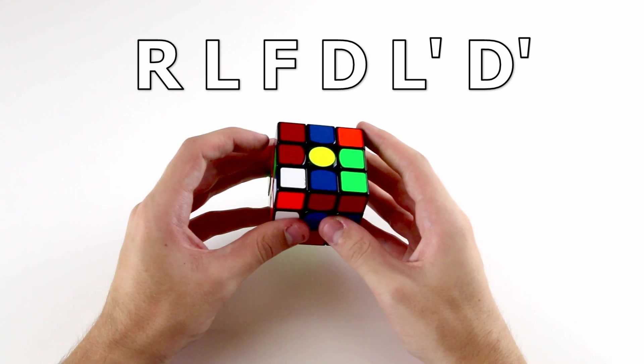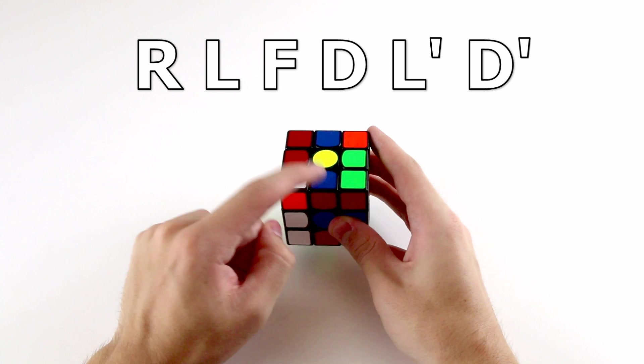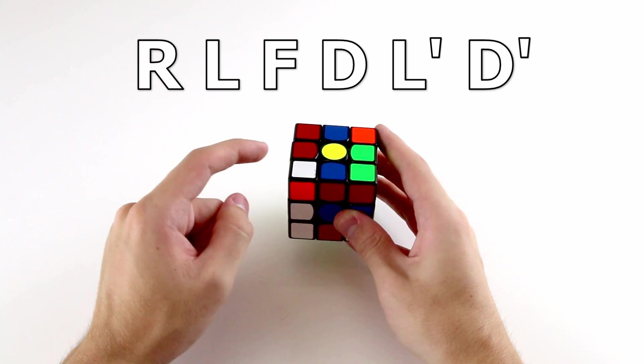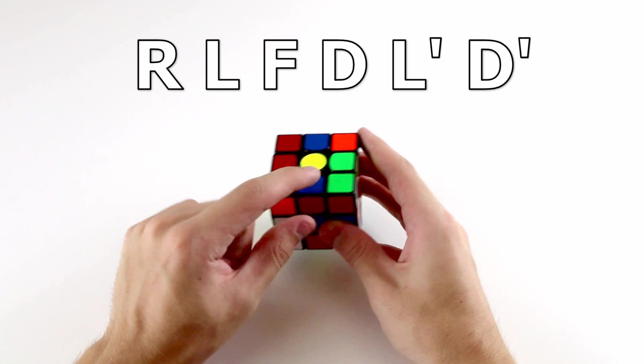Again, if we do an R L F, this edge piece will move to here. If we do an L and then F will move it to there, and then doing a D L' D' will not move this edge piece in this position at all.